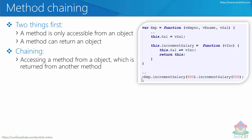So 'OEMP.incrementSalary(500)' — whenever this executes, the function runs and returns the current object. This method is being executed by OEMP, and we are returning the same object. So whenever you say 'OEMP dot that method', that method is going to return the same object no matter what.